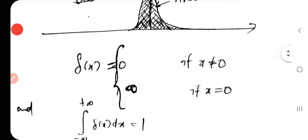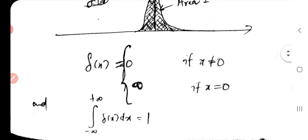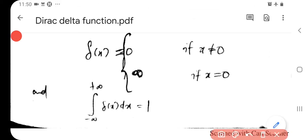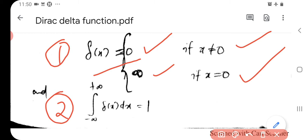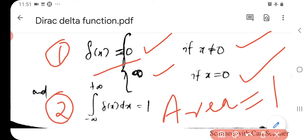Mathematically, the Dirac Delta function is defined as: Delta(x) = 0 if x is not equal to 0, and Delta(x) = infinity when x is equal to 0. Along with this narrow peak condition, the second condition is: the integral from minus infinity to plus infinity of Delta(x) dx equals 1, meaning the area under the function equals 1. Both conditions must be satisfied for the Dirac Delta function.